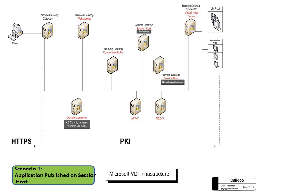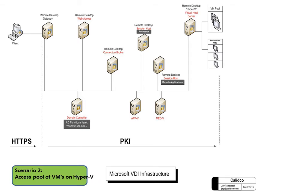From this point, I'll go through how the application gets delivered. The application can be published on a Session Host, and the client can request an application. The client goes to the Remote Desktop Gateway as the first entry point, gets authenticated, goes to Connection Broker, which knows where the application is published, and then that application session gets returned to the user.